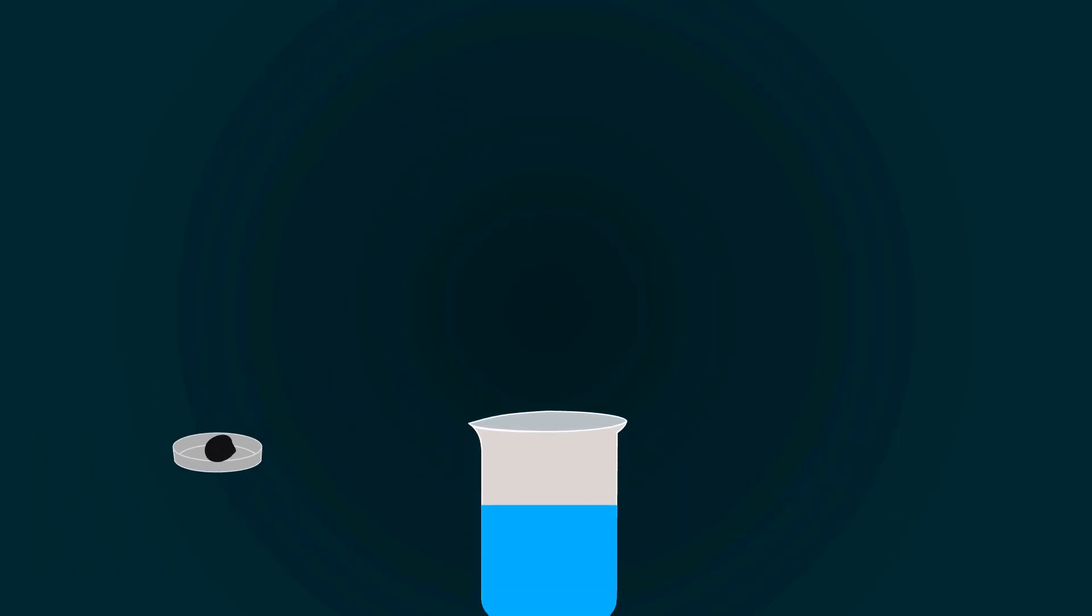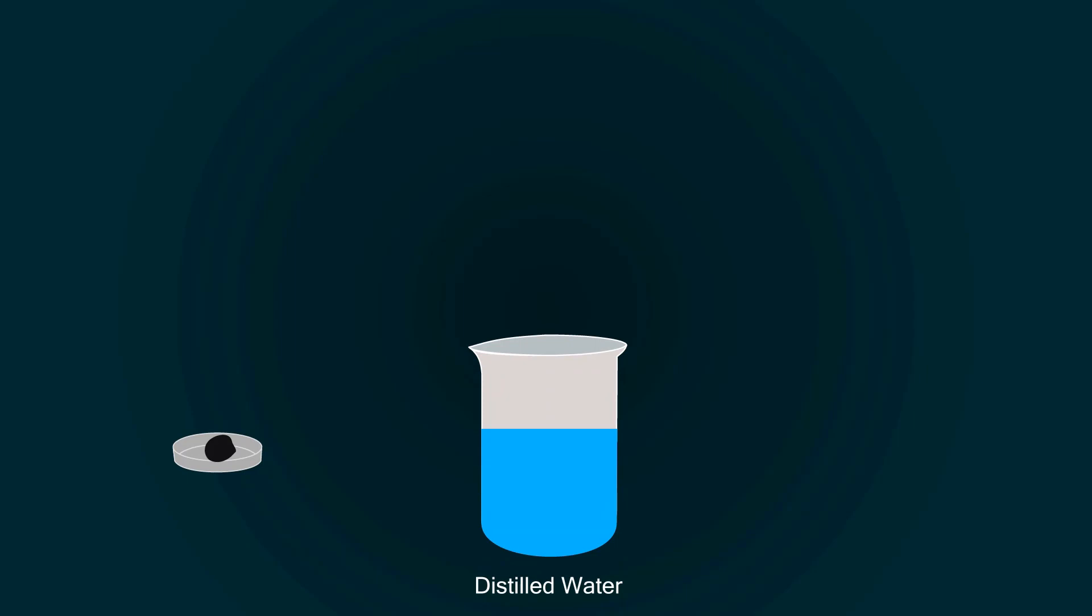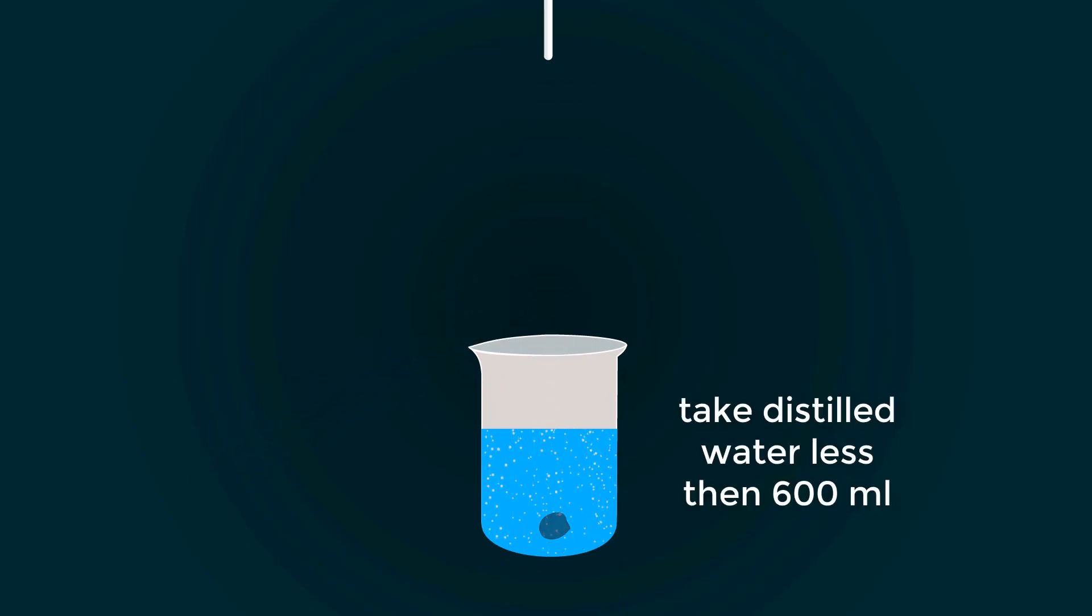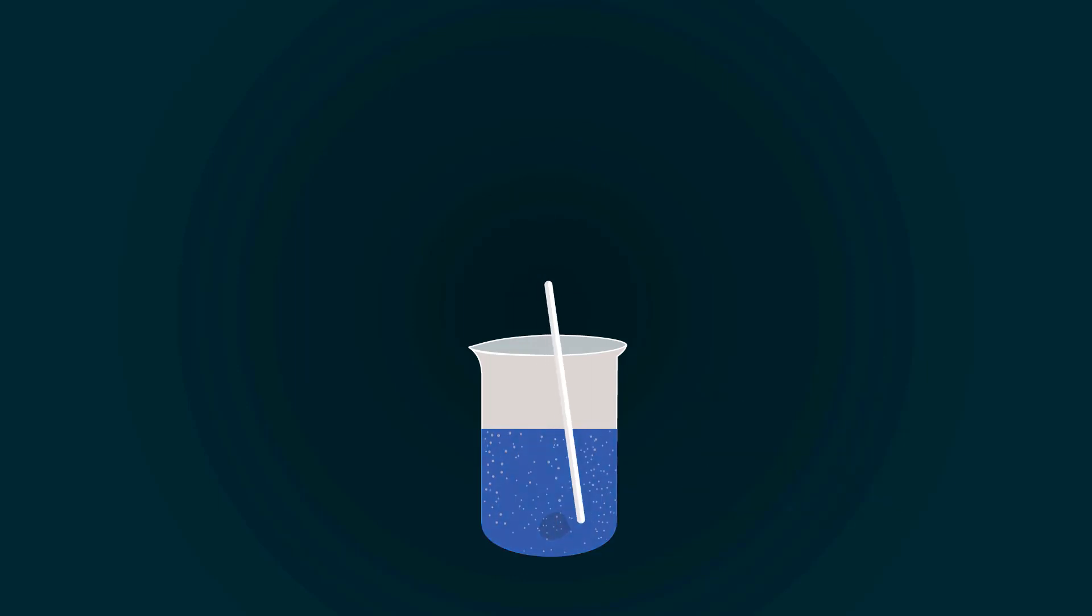Now add the potassium permanganate into the distilled water. You can take distilled water up to 600 milliliters for mixing. You have to make a homogeneous mixture.